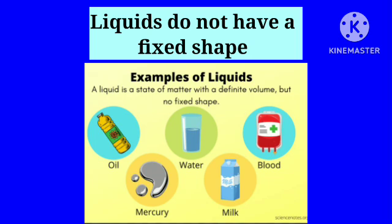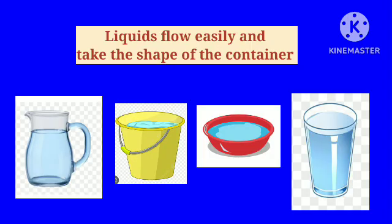Some examples of liquids are oil, water, blood, mercury and milk. When poured, liquids flow easily and take the shape of the container.